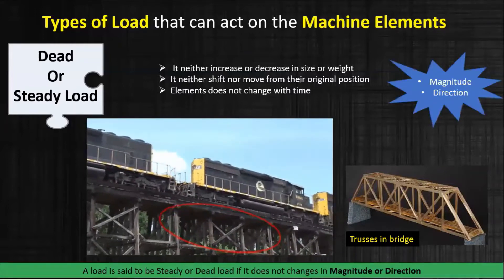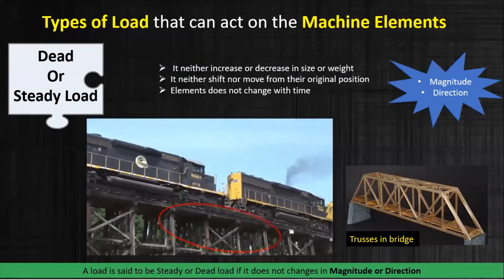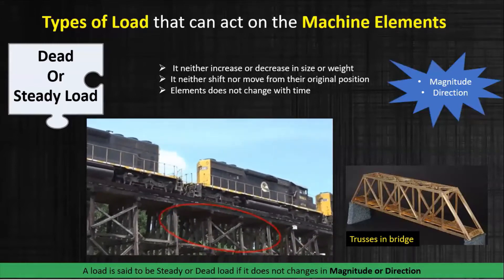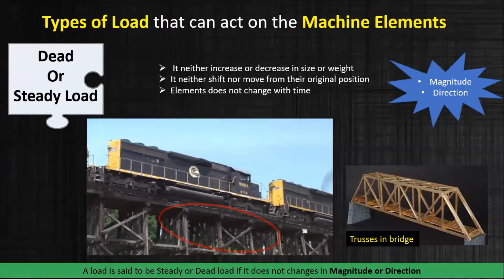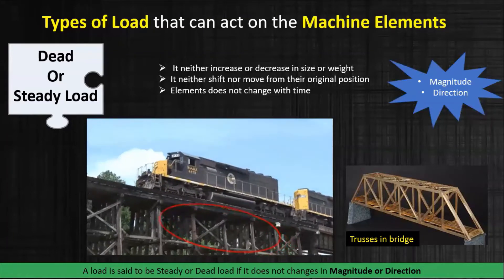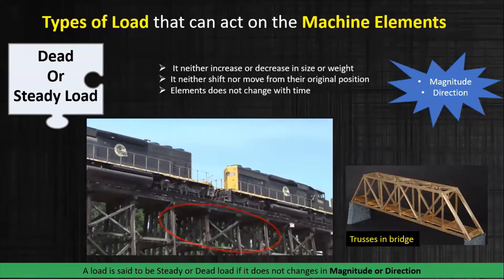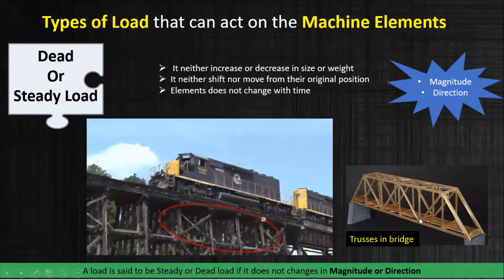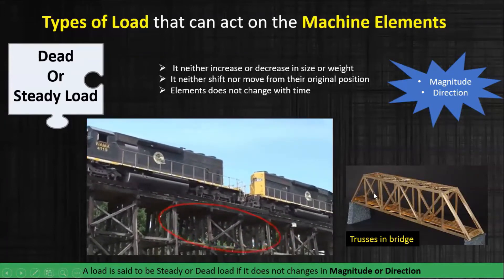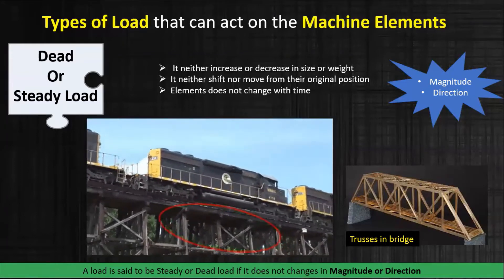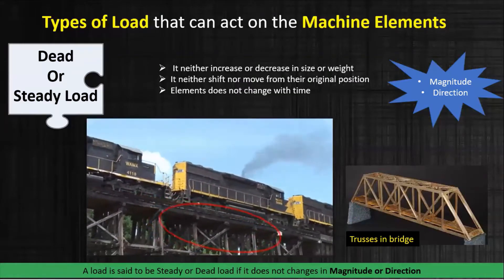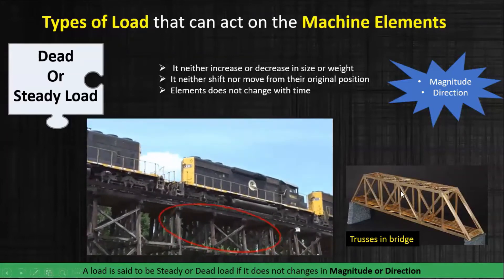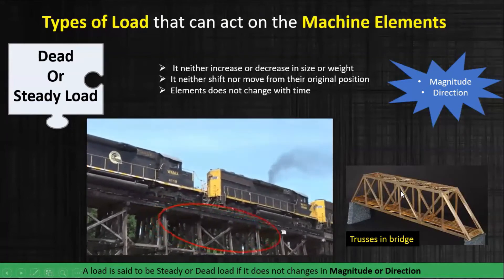A load is said to be a steady or dead load if it does not change in magnitude or direction. In the bridge, magnitude refers to the amount of force acting on each element under tension or compression. For example, if a 100 Newton force is acting on one element, 100 is the magnitude. The direction here is basically the downward direction.